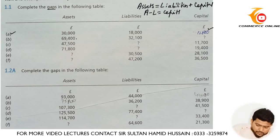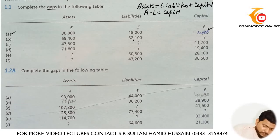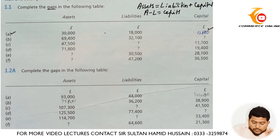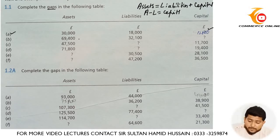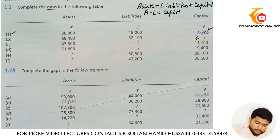In the next question, the assets given is 69,400 and the liabilities is 32,100. We need to subtract liabilities from assets — that is 69,400 minus 32,100 — and we will get 37,300.